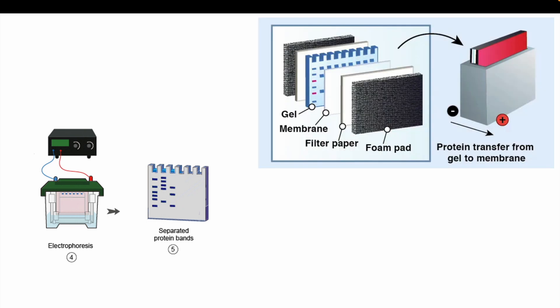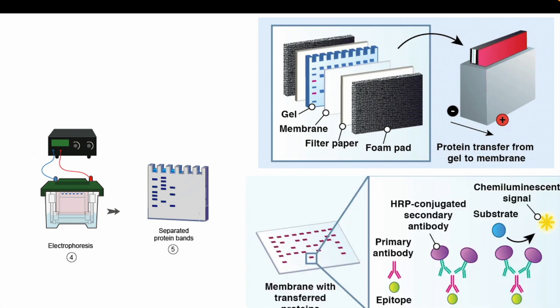We then create a sandwich composed of a gel, a membrane, a filter paper, and a foam pad. After we apply another electrical current, the bands we see in the gel will transfer horizontally into the filter paper. Why do we need to do this step? Because when we stain with antibodies, the gel would not stain correctly, therefore we have to use an inert filter paper.